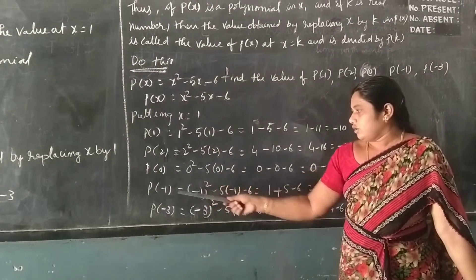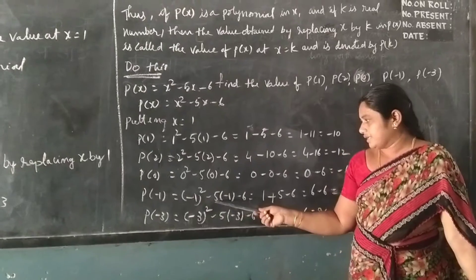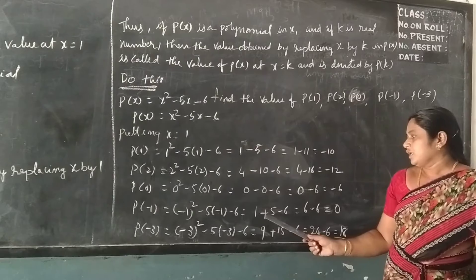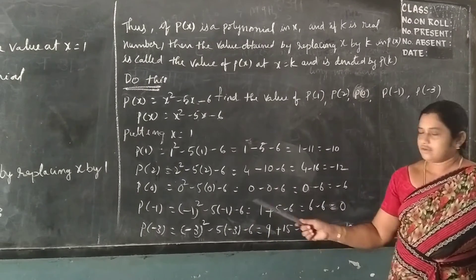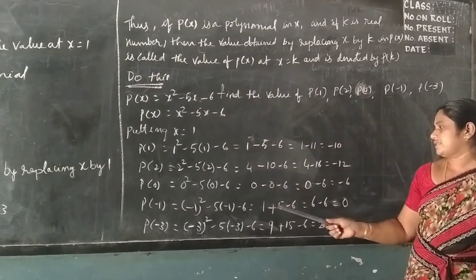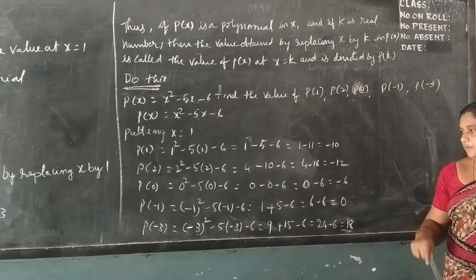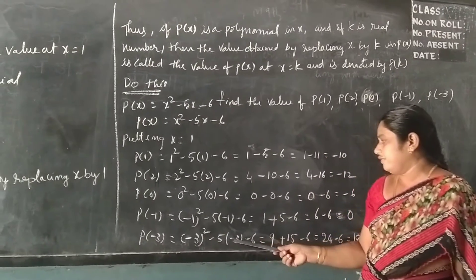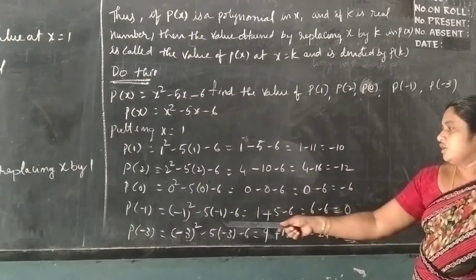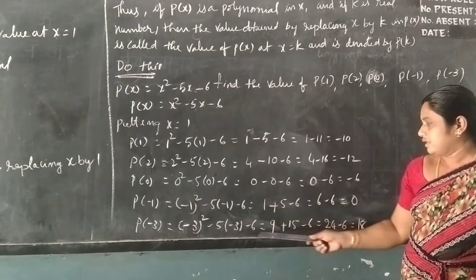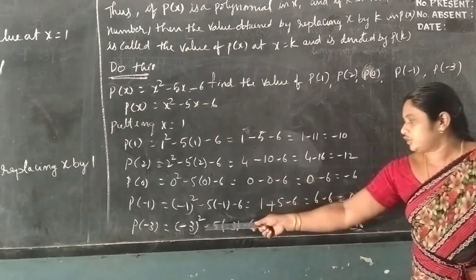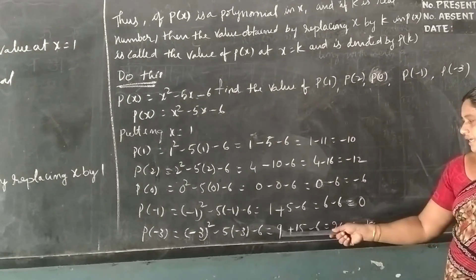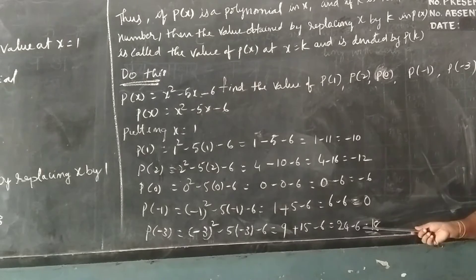P(-1) = (-1)² - 5 × (-1) - 6. Minus times minus gives plus, so 1 + 5 - 6 = 0. Again, P(-3) = (-3)² - 5 × (-3) - 6. Minus times minus gives plus: 9 + 15 - 6 = 18 — wait, 9 + 15 = 24, minus 6 = 18.